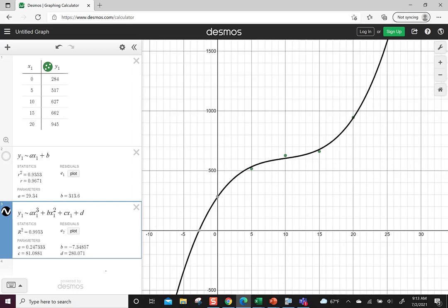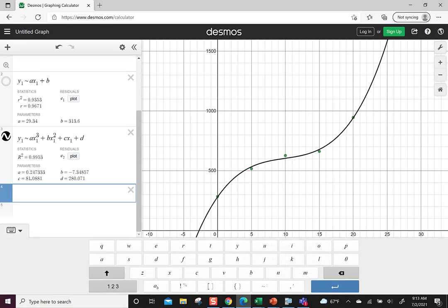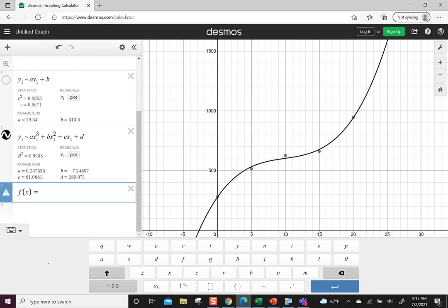Here's this nice curve fitting the graph pretty well. The a, b, c, and d are listed. It says 0.247333 for a, -7.34857 for b, 81.0881 for c, and 280.0714 for d. We're going to do four decimal places, so I'm going to type f(X) = 0.2473X³ - 7.3486X² + 81.0881X + 280.071. Now we have our graph on there as well.